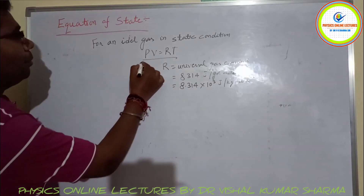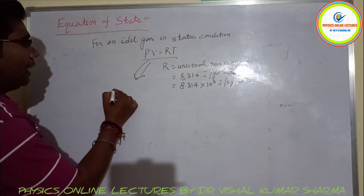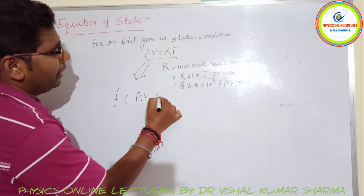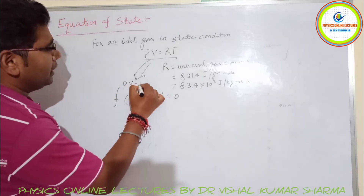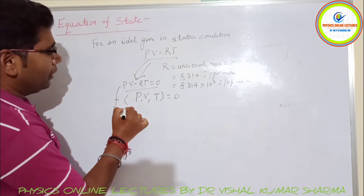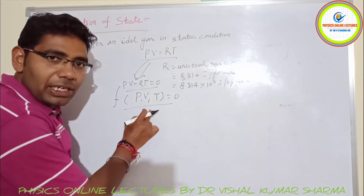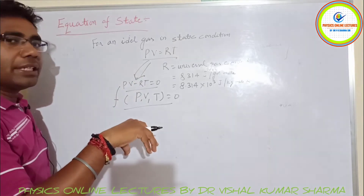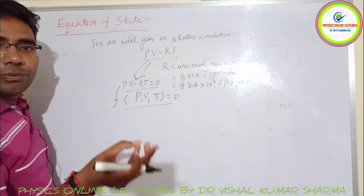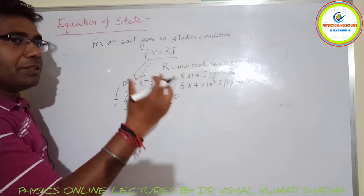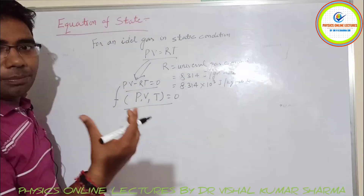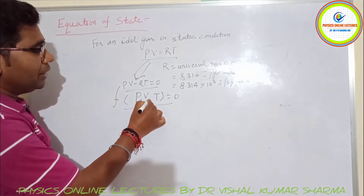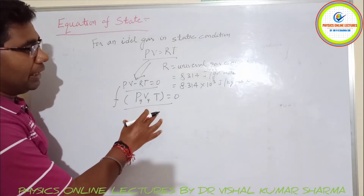So PV = RT is the functional relationship between pressure, volume, and temperature. We can also write this as PV − RT = 0, which is the functional relationship f(P, V, T) = 0 for an ideal gas. This is the equation of state for an ideal gas.